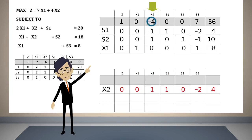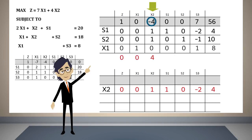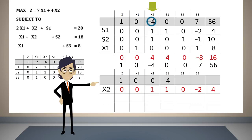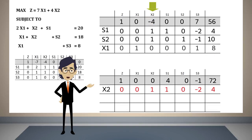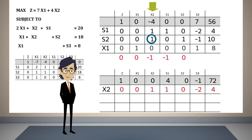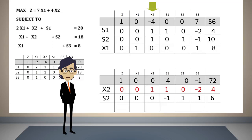To convert minus 4, we multiply the pivot row by 4. The sum will be the new objective function row. To convert the number in the s2 row, we multiply the pivot row by minus one and add it to the s2 row — the sum is the new s2 row. Finally, since the number in the x2 column of the x1 row is zero, the x1 row in the third table will be exactly the same as in the second table. We have finished the third table.